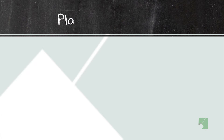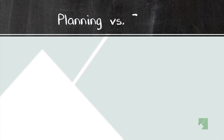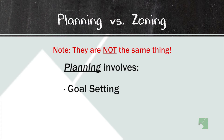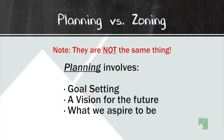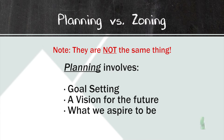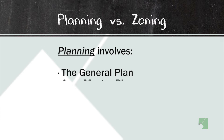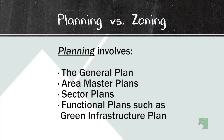First, we'll cover planning versus zoning. They are not the same thing. Planning involves goal setting, a vision for the future, what we aspire to be. Planning involves the general plan, the area master plans, the sector plans, and functional plans that we have for the county.